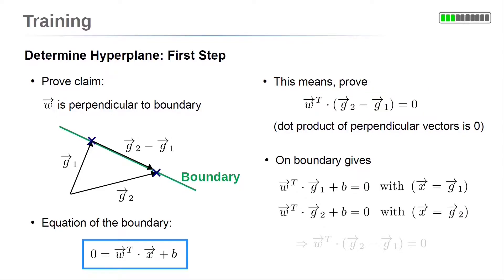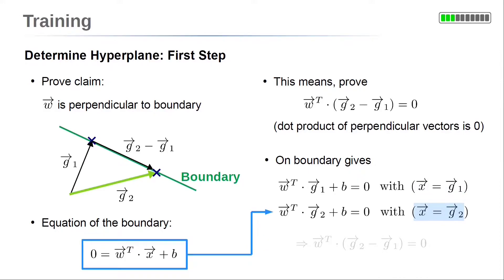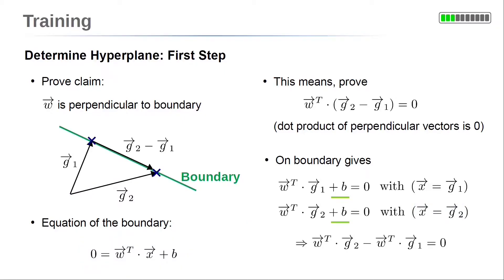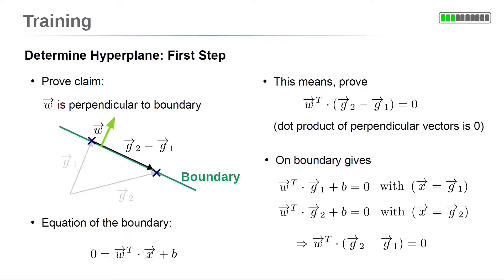Because the data points g1 and g2 are on the boundary, they hold the equation for the boundary. Substituting g1 gives w transpose times g1 plus b equals zero, and similarly with g2, w transpose times g2 plus b equals zero. Calculating the difference of these two equations, the b parameter cancels out. Further, we can multiply out the vector w, giving w transpose times the difference vector g2 minus g1 equals zero. So this means the vector w is perpendicular to the separating boundary.